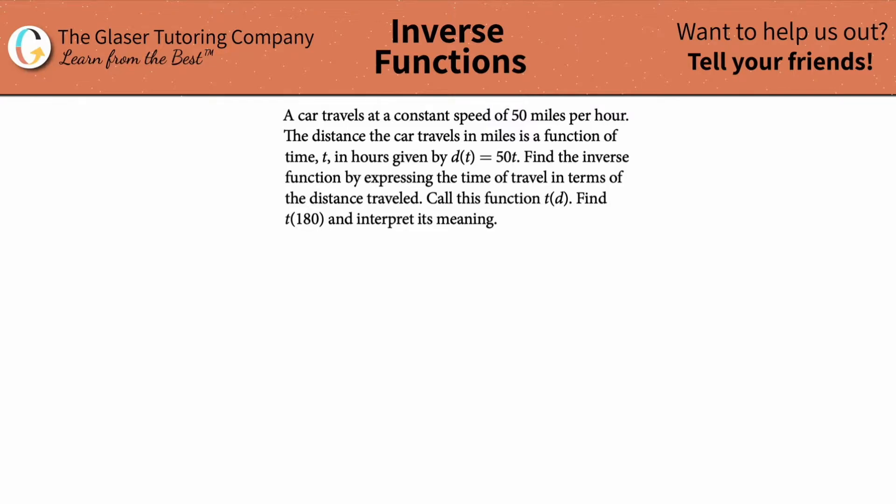A car travels at a constant speed of 50 miles per hour. The distance the car travels in miles is a function of time given by d(t) = 50t. Find the inverse function by expressing the time of travel in terms of the distance traveled. All right, so here's the original. This is actually much easier than you might think.